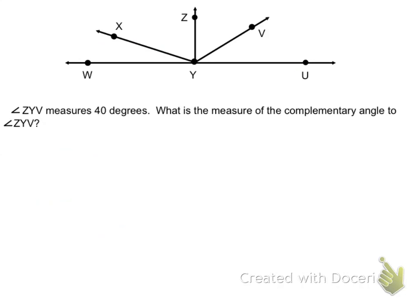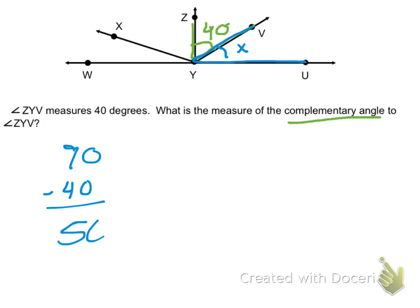Now let's look at another example. If you're feeling comfortable, it might be a good idea to pause the video and check your answer. Angle ZYV measures 40 degrees, and we're looking for the measure of the Complementary Angle. Complementary is 90 degrees, so 90 minus 40 gives me 50 degrees. Hopefully that's what you got on your paper.